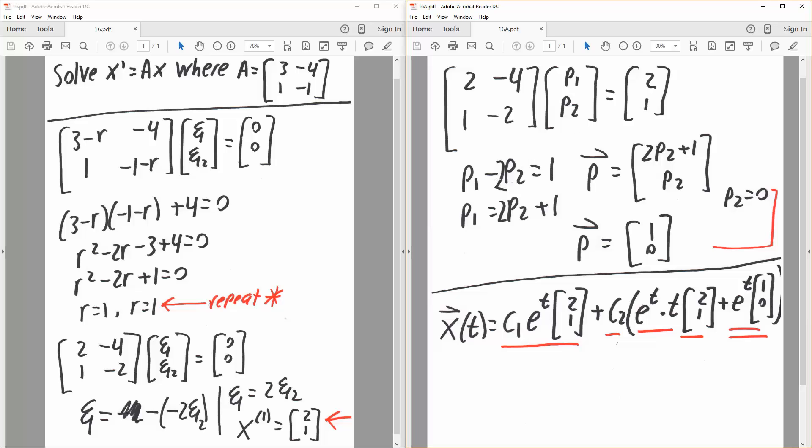And so if we rearrange, we could say that p1 is equal to 2p2 plus 1. And so that means the eigenvector, if you will, would be 2p2 plus 1. p2 remains the same, p2.